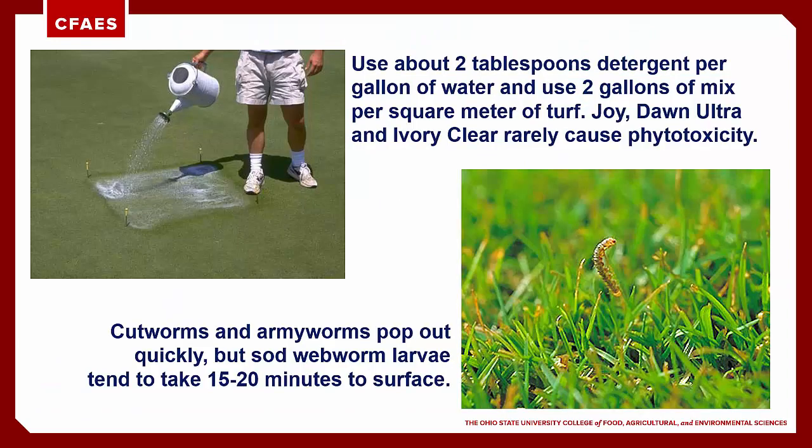Large cutworms and armyworms will quickly surface when exposed to a detergent solution. However, the small sod webworms often take 15 to 20 minutes to emerge from their silk-lined burrows to try and dry off the irritating detergent solution. If you are having difficulty finding caterpillars in turf, use the technique of two tablespoons of dishwashing detergent in two gallons of water. In really warm weather, even cutworms and armyworms may be hiding deep in the thatch, so a disclosing flush may help determine their presence and numbers.